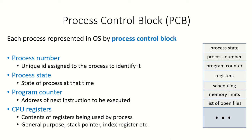When a process is created, the operating system has to maintain information about the process, and so all this information is maintained in a process control block. This is a data structure which is created and maintained by the operating system. Each process is represented in the system by this data structure, which is the process control block.